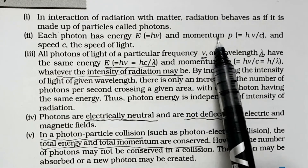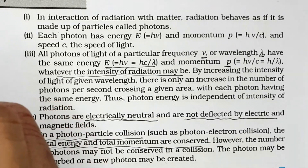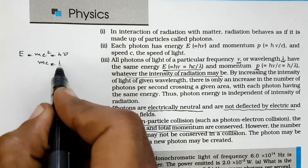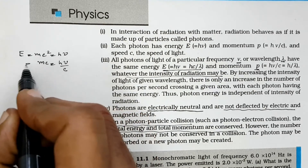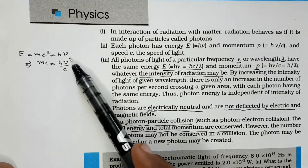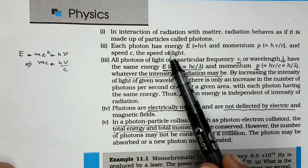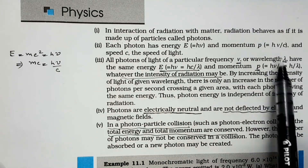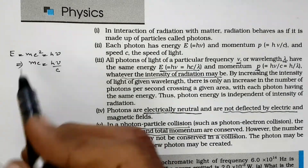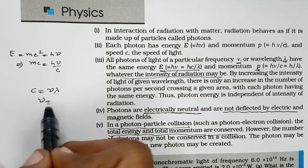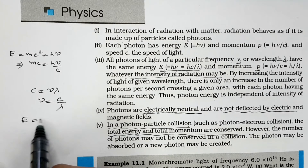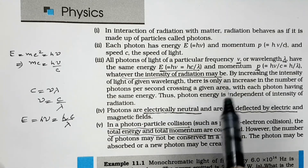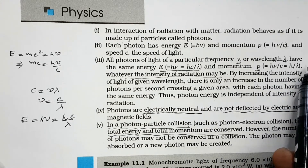The photon also has momentum. Since E = mc² and E = hν, dividing gives mc = hν/c, so the momentum of a photon is p = hν/c. Since c = νλ, we have ν = c/λ, so energy E = hν = hc/λ. The momentum can similarly be expressed as p = h/λ. All photons of light with frequency ν and wavelength λ carry energy E = hν = hc/λ.